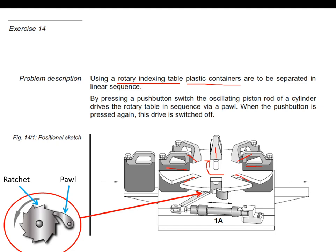Each slot contains a plastic container, and this table is actuated by a pneumatic cylinder via a pawl. The pawl is a lever connected to a tooth gear, also known as a ratchet — this whole mechanism is called a ratchet-pawl mechanism. As the piston moves back and forth — extension and retraction — the pawl moves the table by one step, and in the second cycle it moves another step, hence the name indexing.